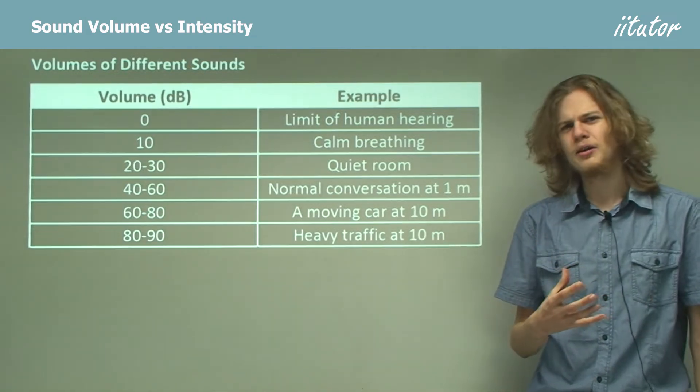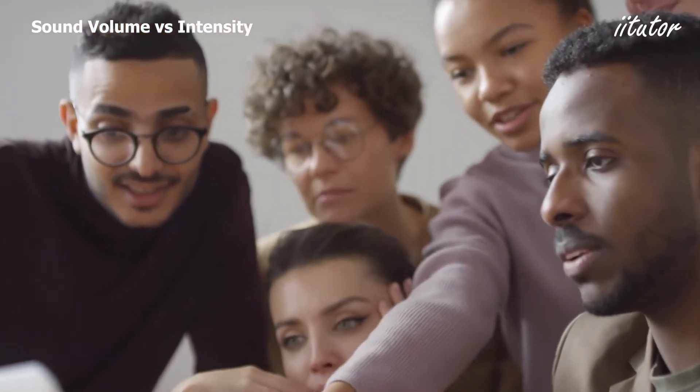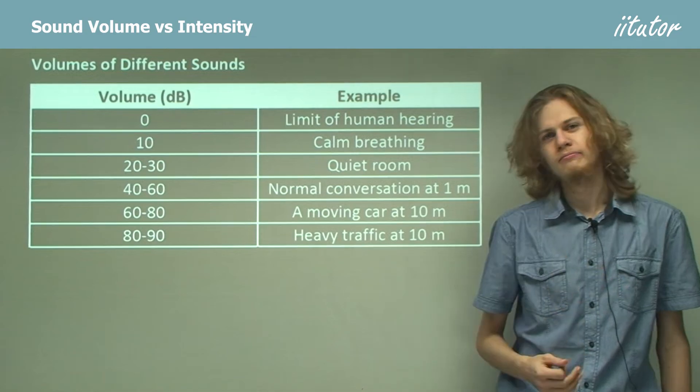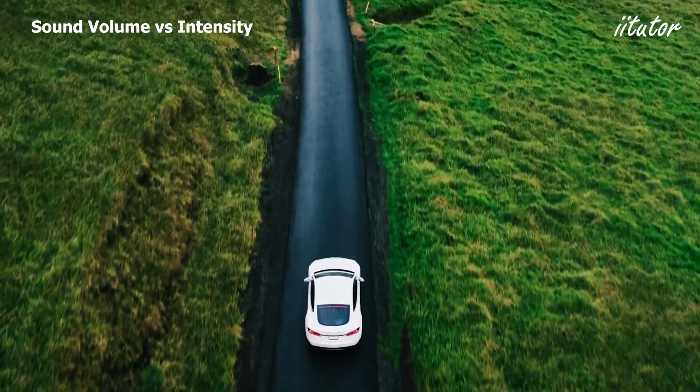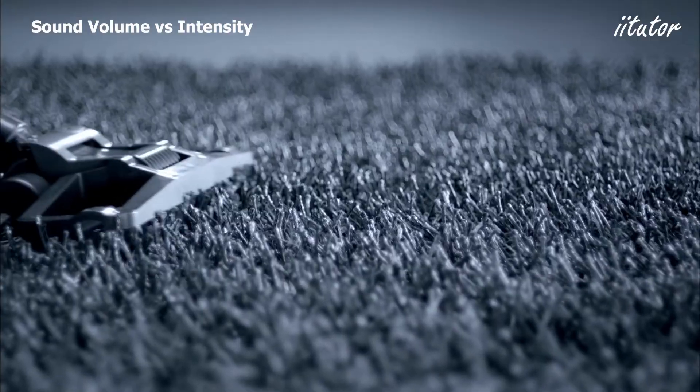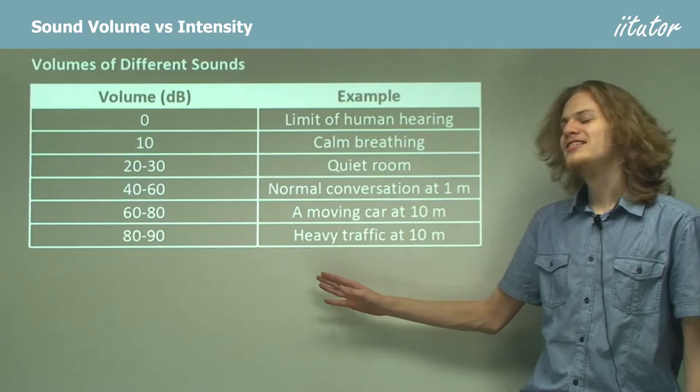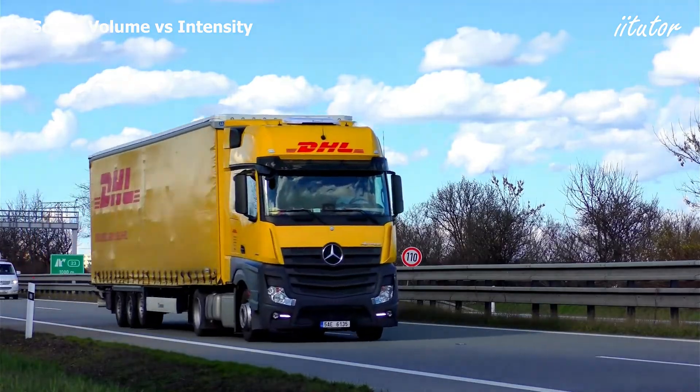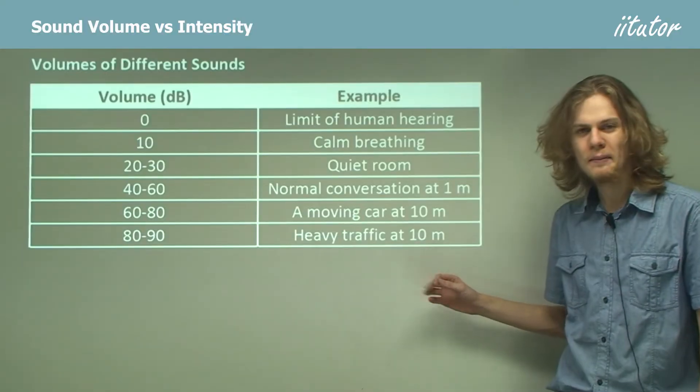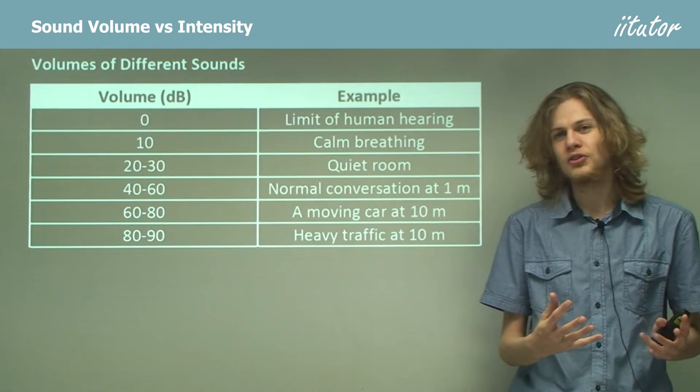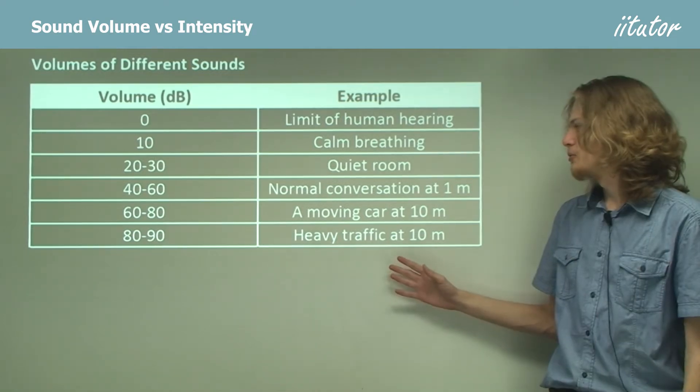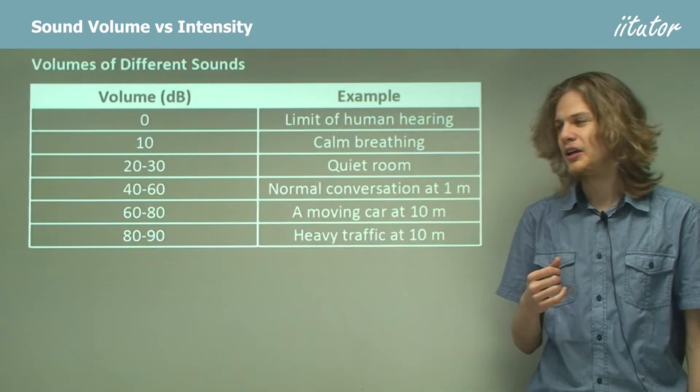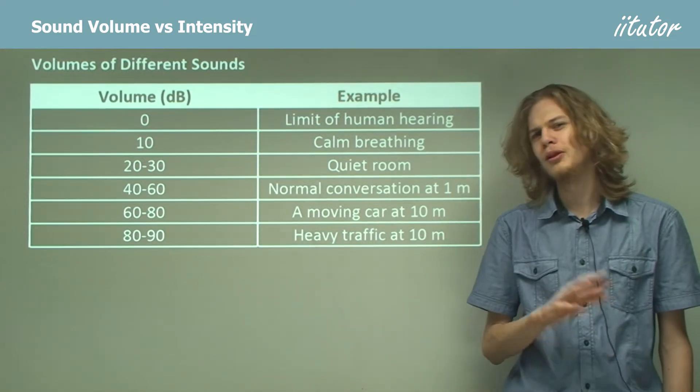About 40 decibels to 60 decibels is the volume of a conversation, with 60 getting into 70 being a fairly loud conversation. At about 60 to 80 we get a moving car that's 10 meters away. 80 to 90, which is 10 times louder, we're getting to the point where we have the sound of traffic that's 10 meters away. So we can see that if we're further away from the source of the sound it'll be softer than if we're very close to it.